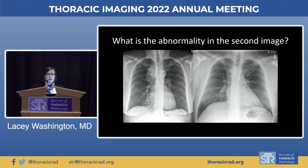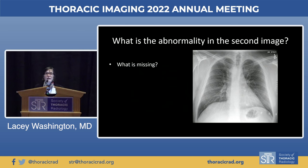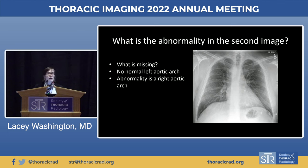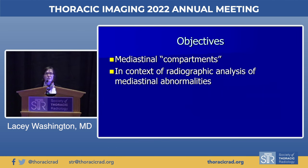But here's another case that looks pretty similar — a big right paratracheal opacity deviating the trachea to the left. Look around carefully: there's no normal left aortic arch. So in this case, we can look at the same kind of finding on a plain film and come up with a very specific differential diagnosis — a right-sided aortic arch — rather than a long list of possibilities.